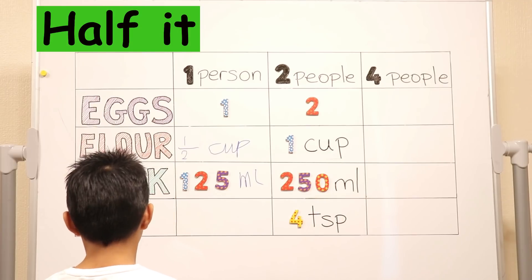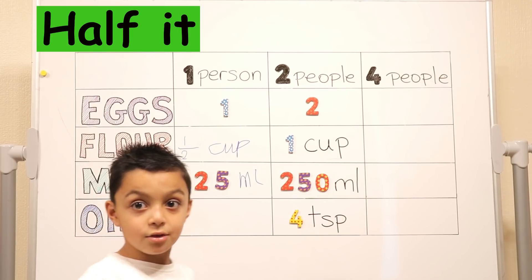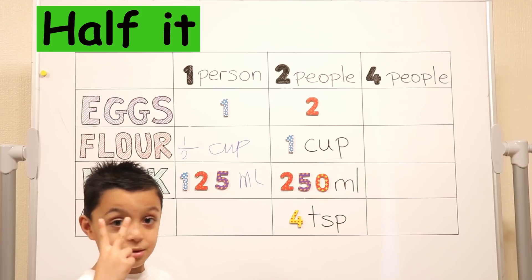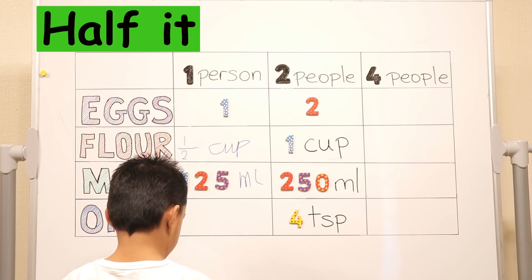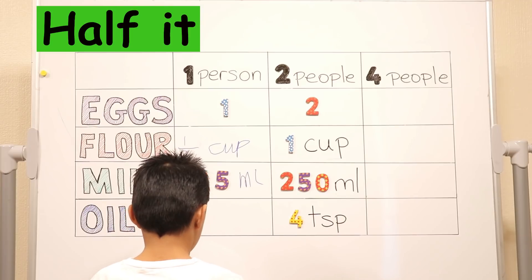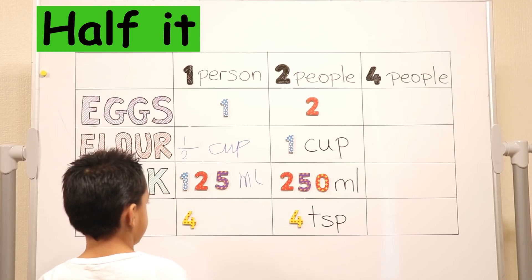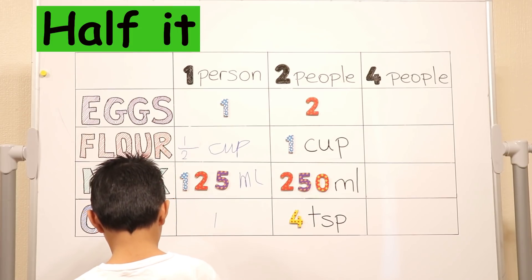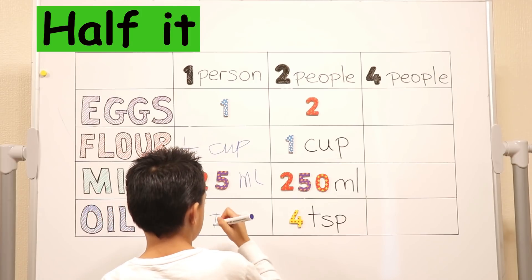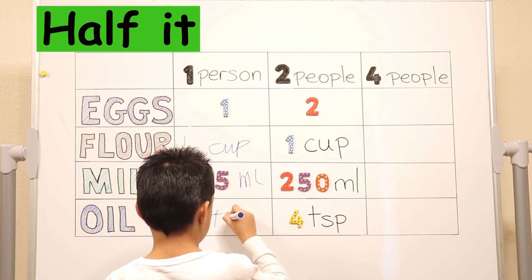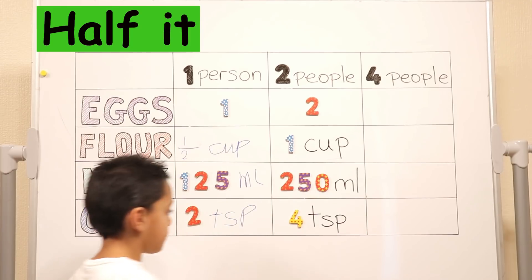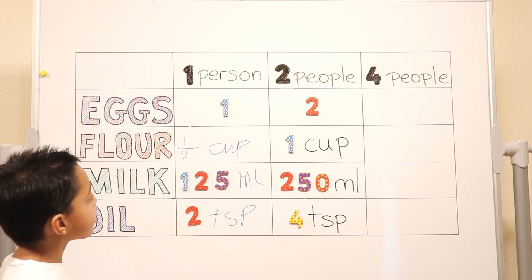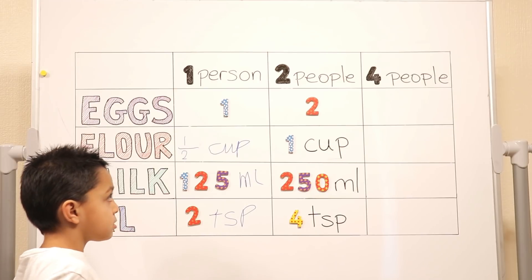And what about oil? How much oil are we going to put for two people? Four teaspoons. Four teaspoons. So that means two teaspoons. Very good. Two teaspoons. So that's how much ingredients we will use to make pancakes for one person.